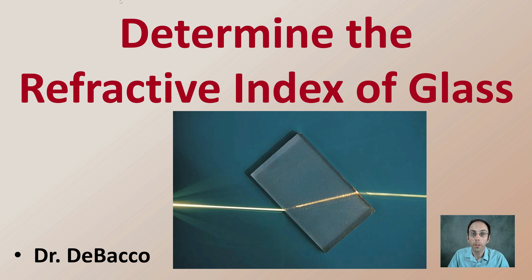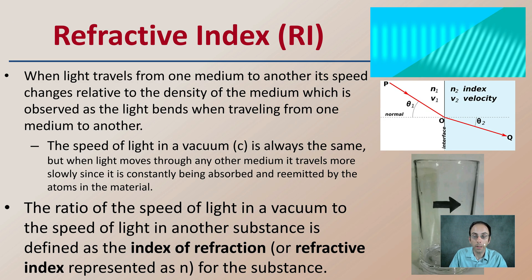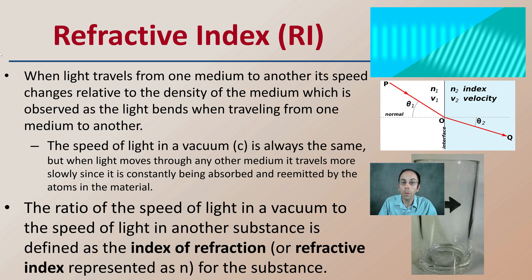Welcome to DeBaco University. Here we're going to be looking at a video lecture to determine the refractive index of glass. Refractive index, abbreviated RI, looks at when light travels from one medium to another its speed changes relative to the density of the medium, which is observed as the light bending while traveling from one medium to the other.